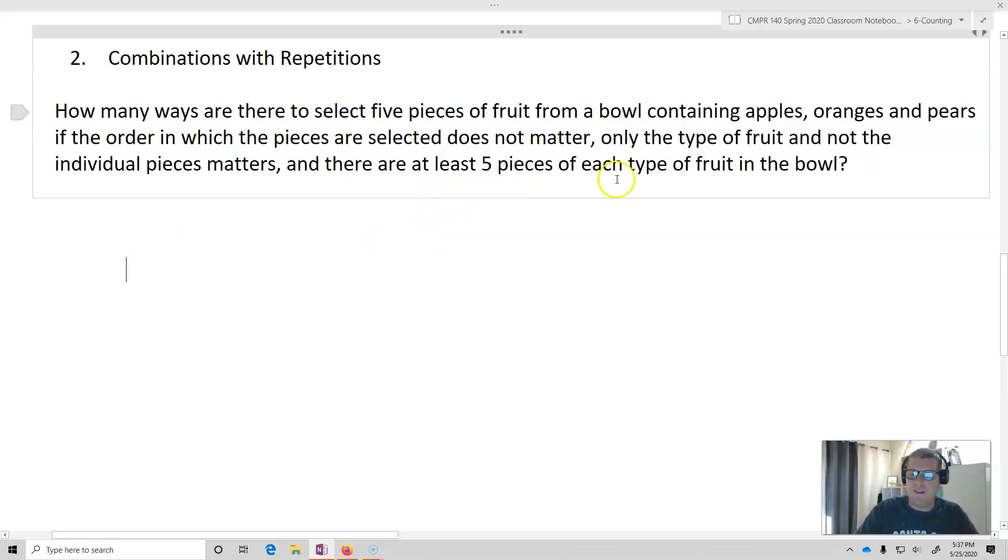So we have five pieces of each type of fruit. What I'm going to do is a problem called the stars and bars. I want to imagine that I've got my five pieces of fruit: one, two, three, four, five. Those are my stars. And my bars are what are going to divide them up.